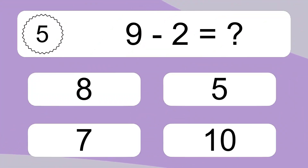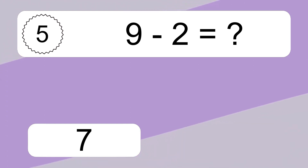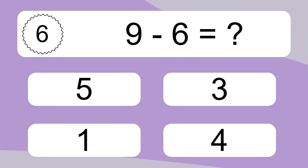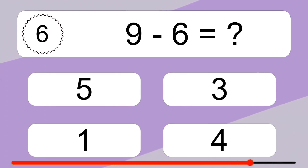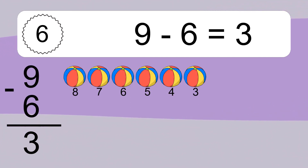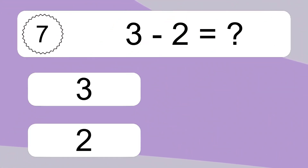9 minus 2 equals what? 9 minus 2 equals 7. Let's count it: 8, 7. 9 minus 6 equals what? 9 minus 6 equals 3. Let's count it: 8, 7, 6, 5, 4, 3.